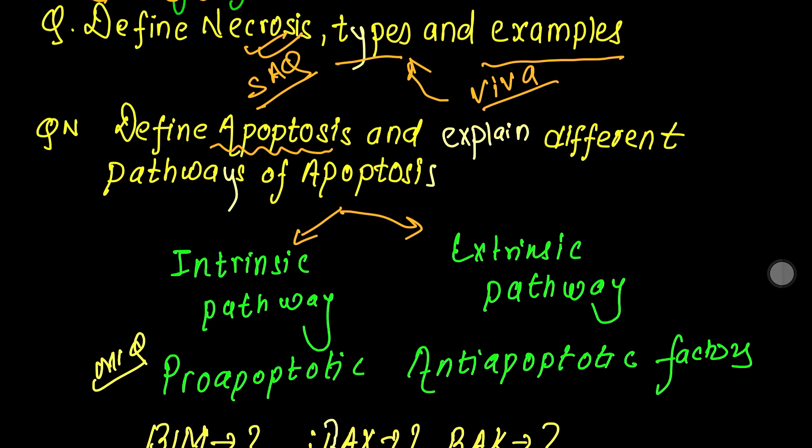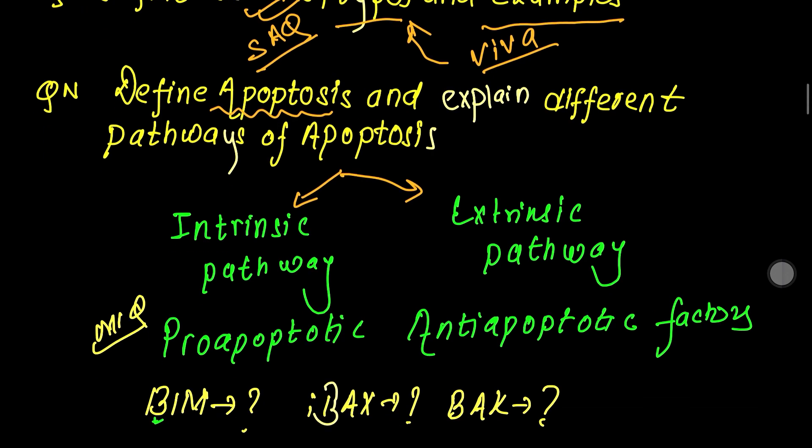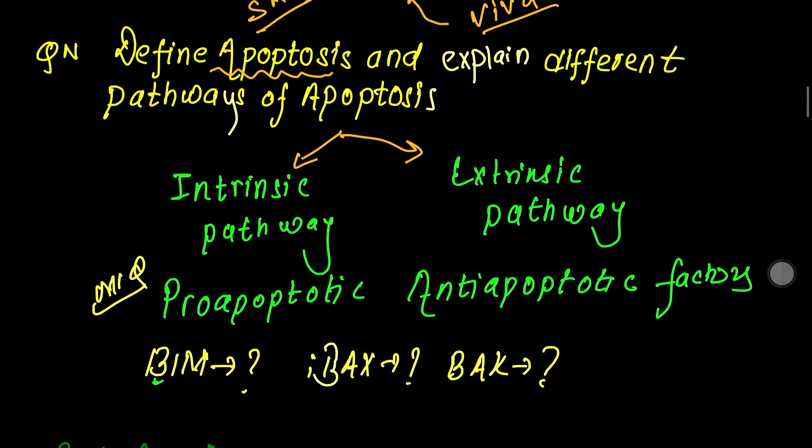Apoptosis has two pathways: the intrinsic and extrinsic pathway. This is a maximum-time MCQ topic. You need to know the pro-apoptotic factors and anti-apoptotic factors, including BCL-2 family members.